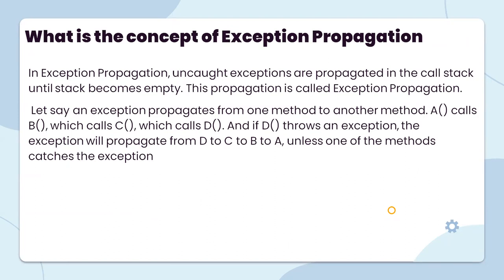What is the concept of exception propagation? Propagation means sending from one to another. In exception propagation, uncaught exceptions are propagated in the call stack until the stack becomes empty. This propagation is called exception propagation.